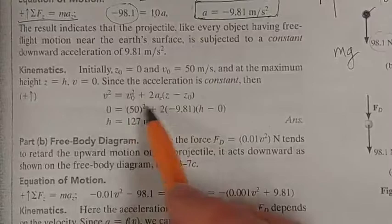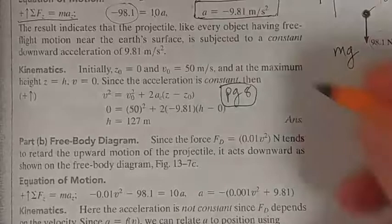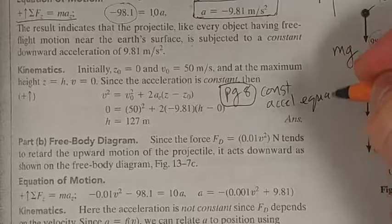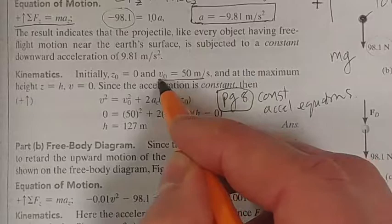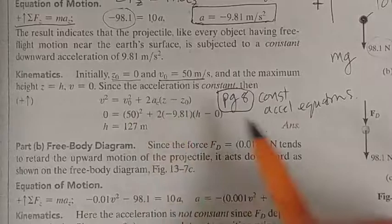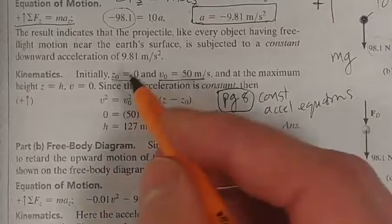Remember, we can only use these types of equations. Remember, go to page 8 in your textbook and see what I'm talking about. The constant acceleration equations. And so we have, what do we have? We've got acceleration information. We have velocity information. That's our initial velocity. We're looking for height information. Height information. So we need to find one of these equations which can relate those variables.